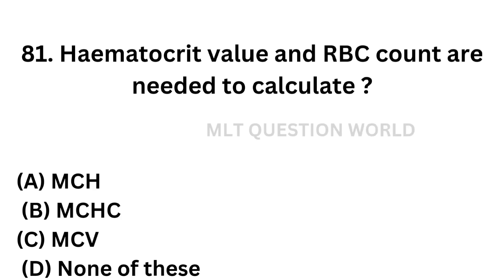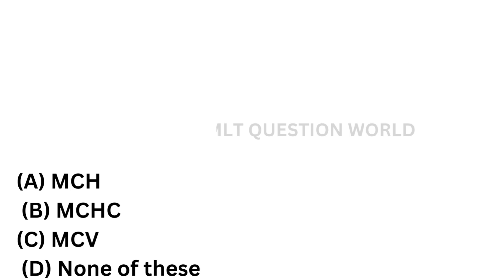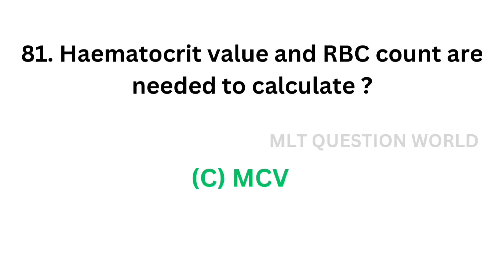Question number 81: Hematocrit value and RBC count are needed to calculate. Option A: MCH. Option B: MCHC. Option C: MCV. Option D: none of these. MCH can be calculated by HB × 10 / RBC. MCHC (mean cell hemoglobin concentration) can be calculated by HB × 100 / PCV. MCV can be calculated by PCV × 10 / RBC. So the correct answer is Option C, MCV — hematocrit value and RBC count are needed to calculate MCV, mean cell volume.